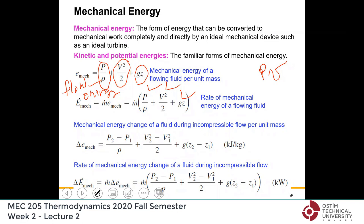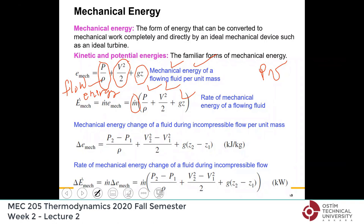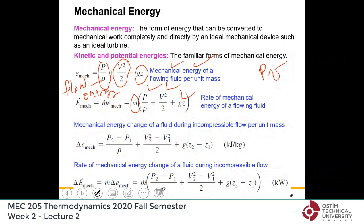If the flow rate is m-dot (kilograms per second, the mass flow rate), then m-dot times (p over rho plus V-squared over two plus gz) is the rate of mechanical energy of a flowing fluid. A flowing fluid has this much mechanical energy accompanying it. You will see this in detail in fluid mechanics using Bernoulli's equation.